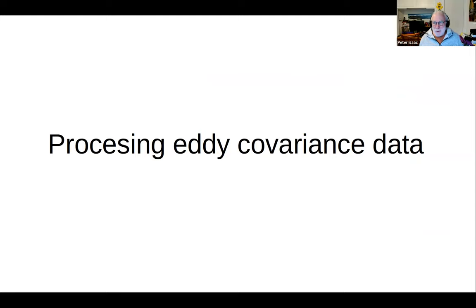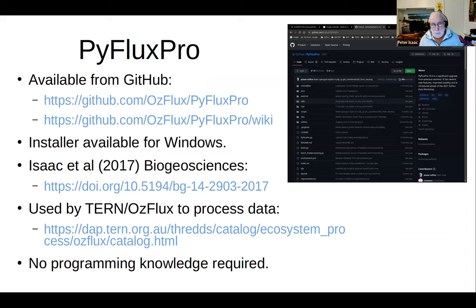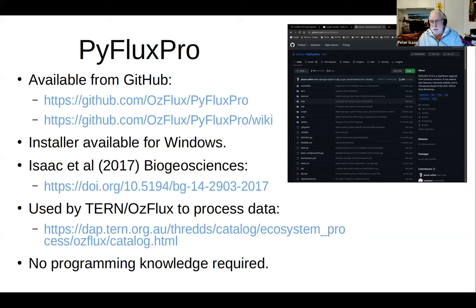Processing of eddy covariance data: PyFlux Pro. PyFlux Pro is available from GitHub — just Google 'GitHub PyFlux Pro' and it'll take you straight to the repository. It also has a reasonably complete wiki with instructions on installation and carrying out processing at varying levels, plus definitions of variables. It has an installer available for Windows, so you don't have to install your own Python version. The precursor — called AusfluxQC — is described in the Isaac et al. 2017 Biogeosciences paper, and the same basic process applies.